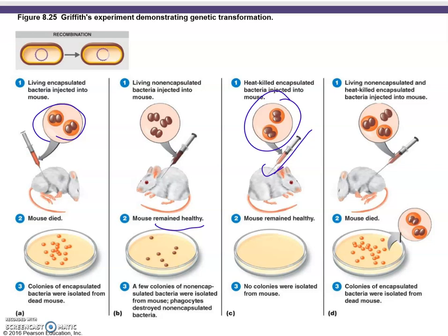Here's the key finding: when heat-killed bacteria — where only the DNA remains but the cells are dead — are mixed with live non-pathogenic bacteria, the genetic information is shared with the non-pathogenic bacteria. When this mixture is injected, the mouse dies because the genetic information transformed the non-pathogenic bacteria into pathogenic ones.